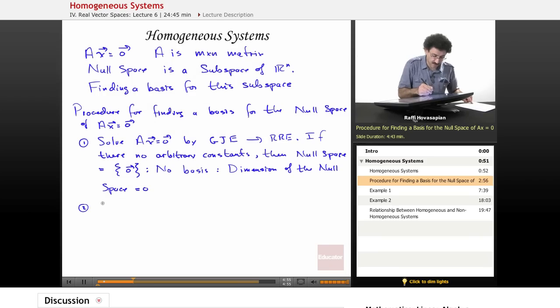Our second possibility is if arbitrary constants do exist, after we reduce it to reduced row echelon form, and what that means is if there are columns that don't have leading entries, those are the values corresponding to those columns, let's say it's the third and fifth column, so x3 and x5, I can give them any value I want. That's what the arbitrary constant means.